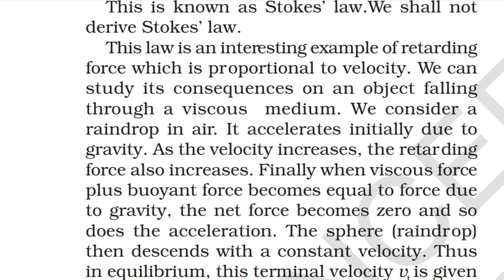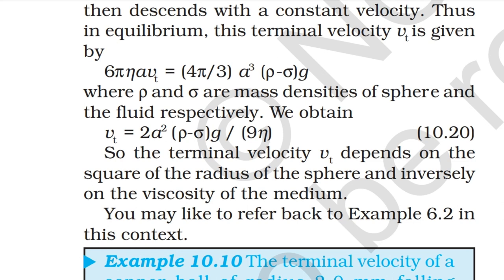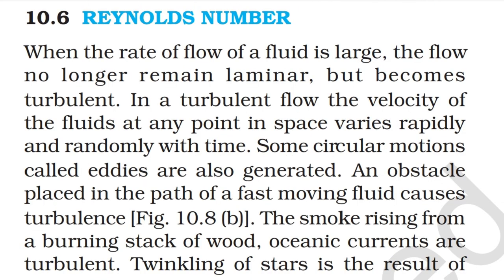Consider a raindrop in air: it accelerates initially due to gravity; as velocity increases, the retarding force increases; finally, when viscous force plus buoyant force equals the gravitational force, net force becomes zero and acceleration ceases. The sphere then descends with terminal velocity v_t given by: 6πηav_t = (4π/3)a³(ρ − σ)g, yielding v_t = 2a²(ρ − σ)g / 9η. Terminal velocity depends on the square of the radius and inversely on viscosity.